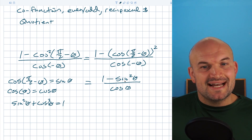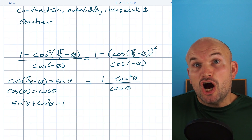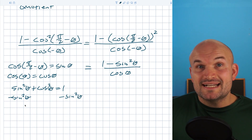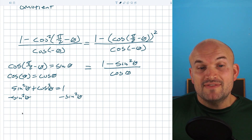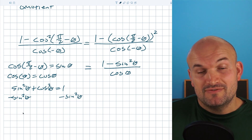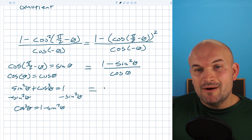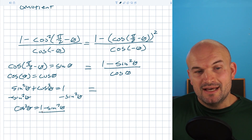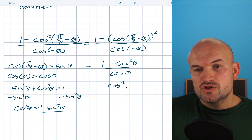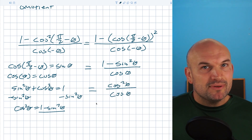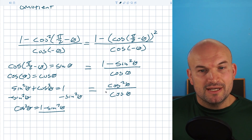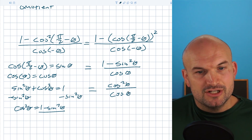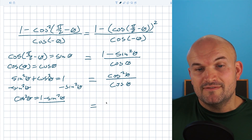If I want to get one minus sine squared of theta, I can use the Pythagorean identity sine squared of theta plus cosine squared of theta equals one. Subtracting sine squared of theta from both sides gives cosine squared of theta equals one minus sine squared of theta. So I can replace one minus sine squared of theta with just cosine squared of theta divided by a cosine of theta.